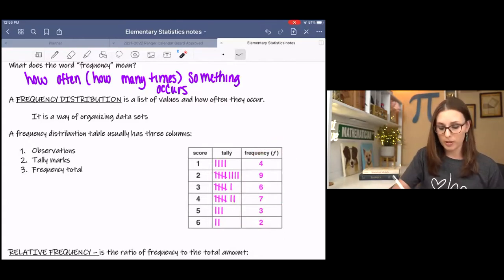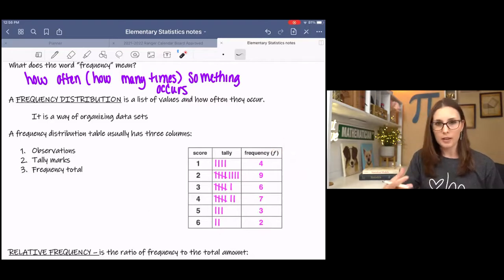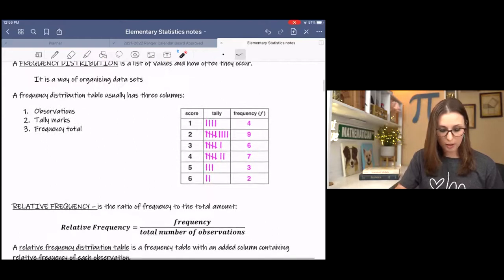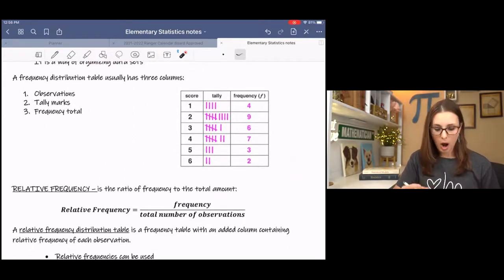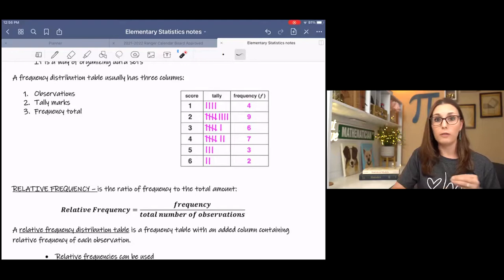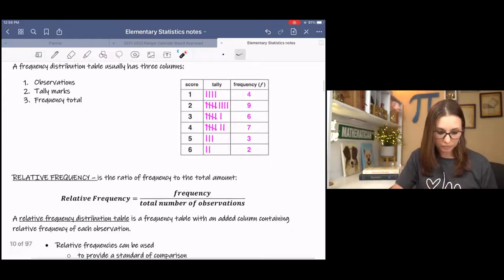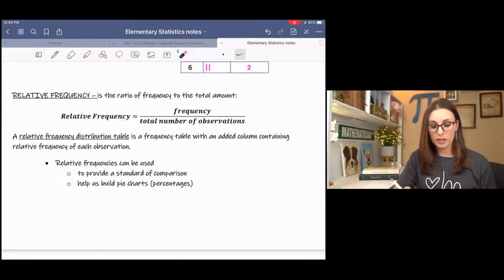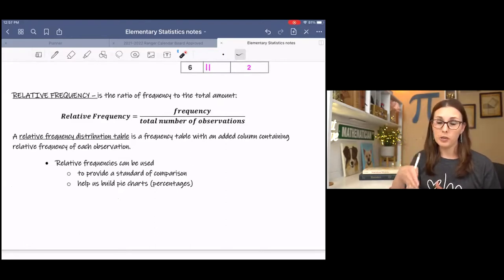And the symbol we use for frequency is this lowercase kind of italicized f. A relative frequency is the ratio of the frequency to the total. So relative frequency is basically a percentage in decimal form. A relative frequency distribution table is a frequency table with just an additional column. It has that relative frequency as the last column.